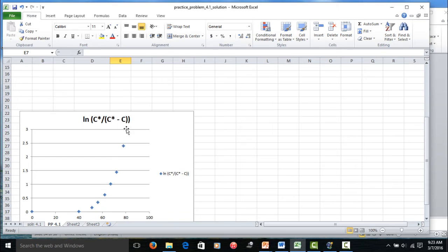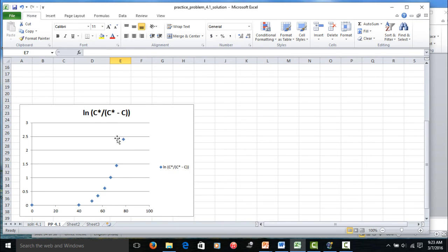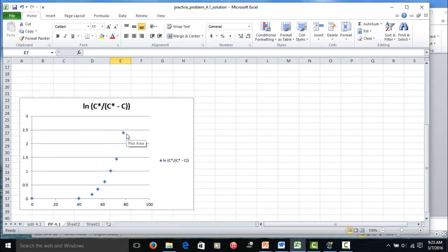If we plot log of C star by C star minus C versus time, you get a curve something like this. However, we can use that particular equation only in the linear regime for oxygen sorption. This is a non-linear regime here that is to be expected. We are going to look only at this region for calculation of KLA. We are going to look at only the slope of this particular region. We are going to drop the first three points which are in the non-linear region.